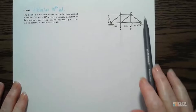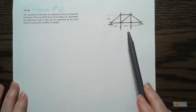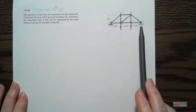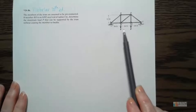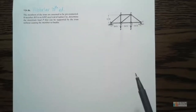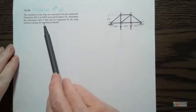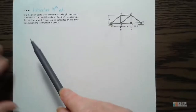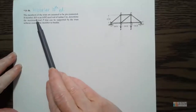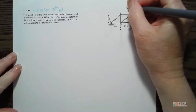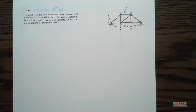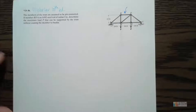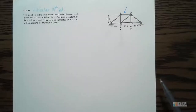So here we've got this truss — it's not too complicated. We've got a pin over here, a roller here, and applied forces P and P right here. We're also told that members of the truss are going to be pin connected, which is typically what we assume. Member BD is going to be an A992 steel rod with a radius of two inches. We want to find the max load P that can be supported by the truss without causing the member to buckle.